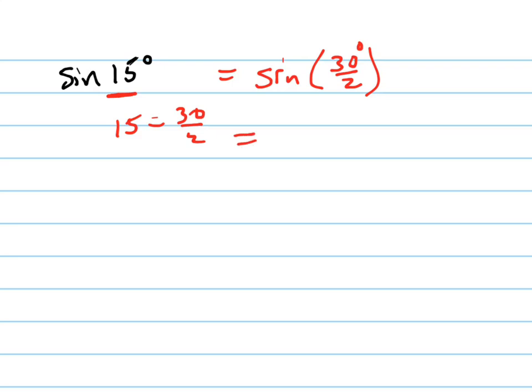This equals the sine of 30 over 2, which using that formula is plus or minus, and I'll explain which one to use, 1 minus the cosine of 30, which I know, over 2.